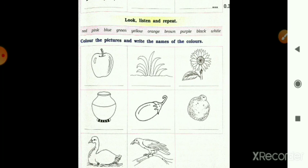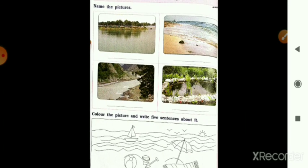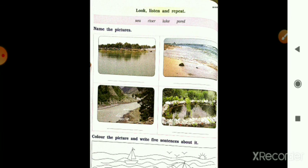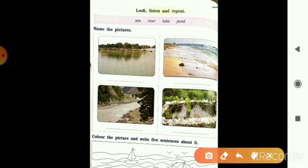Isi tarah saari exercise aapko color fill karni hai. Okay. Then sea, river, lake, pond. Ab yahan pe jo exercise hai usme kya karna hai aapko? Jo picture diye hue hain uske below uska naam likhna hai.